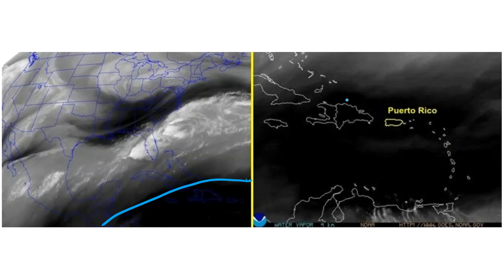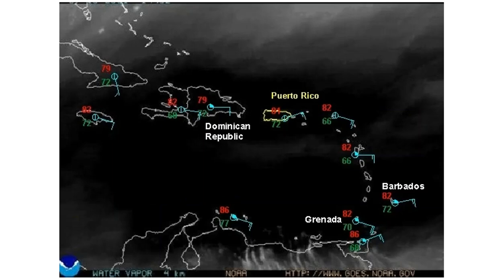It certainly includes Puerto Rico and Hispaniola. But don't let the dark shading cause you to conclude that the entire air column is dry. Adding surface station models to the water vapor image shows surface dew points of 72 degrees at these stations in the Dominican Republic and Puerto Rico.